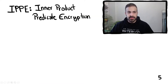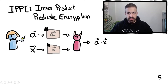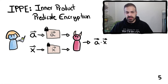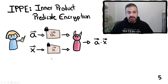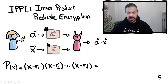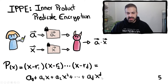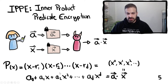Our work uses the following primitive: IPPE, inner product predicate encryption, which works as follows. Alice has two vectors a and x. She can compute the ciphertext of each of these vectors and send the ciphertext to the adversary. The adversary using the ciphertext can compute the inner product of the plaintext but they don't learn anything else about the plaintext. We use IPPE for the secure evaluation of polynomials. A polynomial can be written in terms of its roots but also expanded in terms of its coefficients, and this expression is just the inner product of a — the vector of polynomial coefficients — and x, which is the vector x^0, x^1, x^2 and so on. So we can use an IPPE scheme to evaluate polynomials securely.